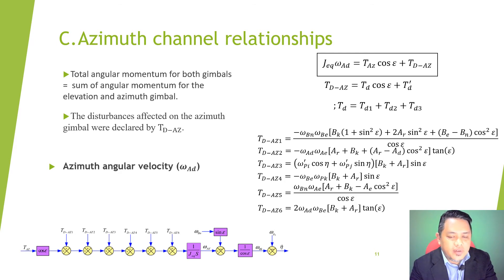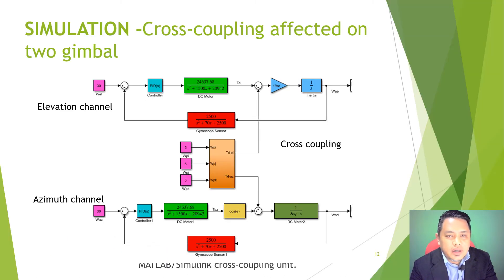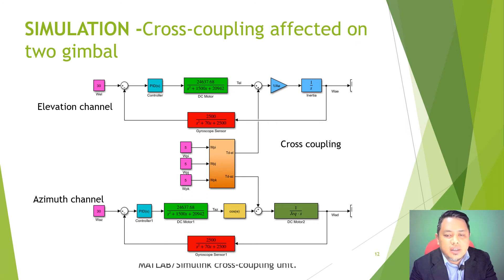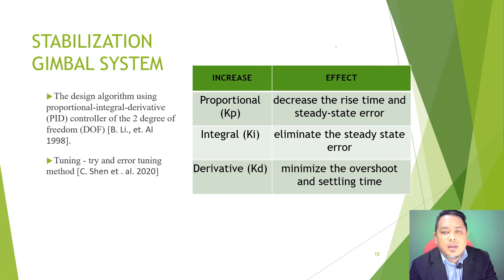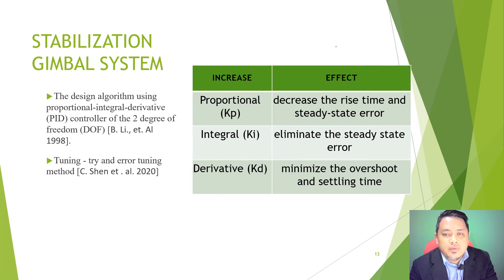We can then build the model block for simulation in MATLAB. Here is the simulation showing cross-coupling effects on the two gimbals — the elevation channel, the cross-coupling, and the azimuth channel. For this gimbal stabilization system, two types of control method are applied: PID — proportional, integral, and derivative — giving a PID controller for two degrees of freedom.